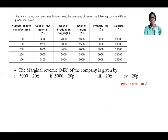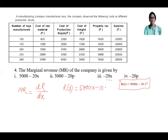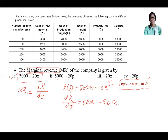Coming to question four. Marginal revenue is the derivative of the revenue function with respect to x. We found R(x) = 5000x − 10x². Differentiating: dR/dx = 5000 − 20x. So marginal revenue MR = 5000 − 20x, which is option one.